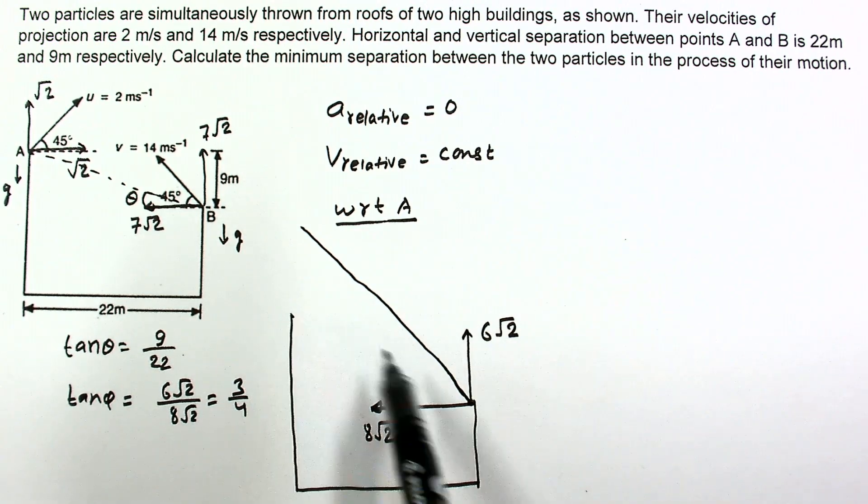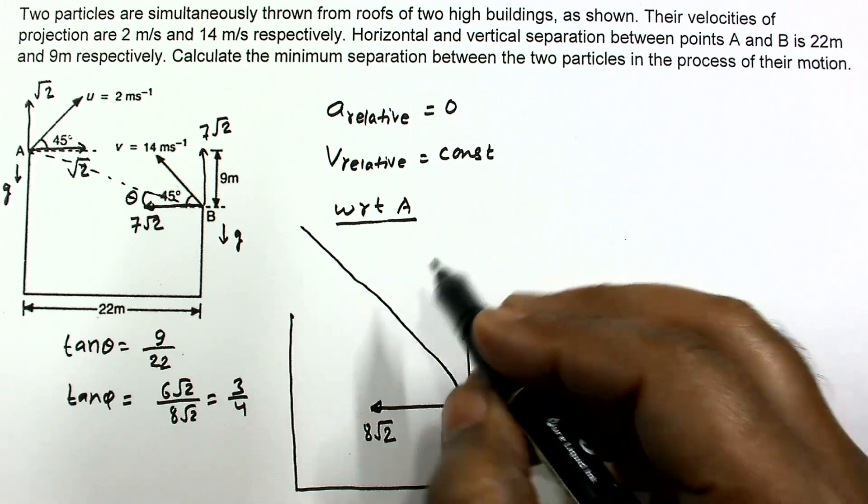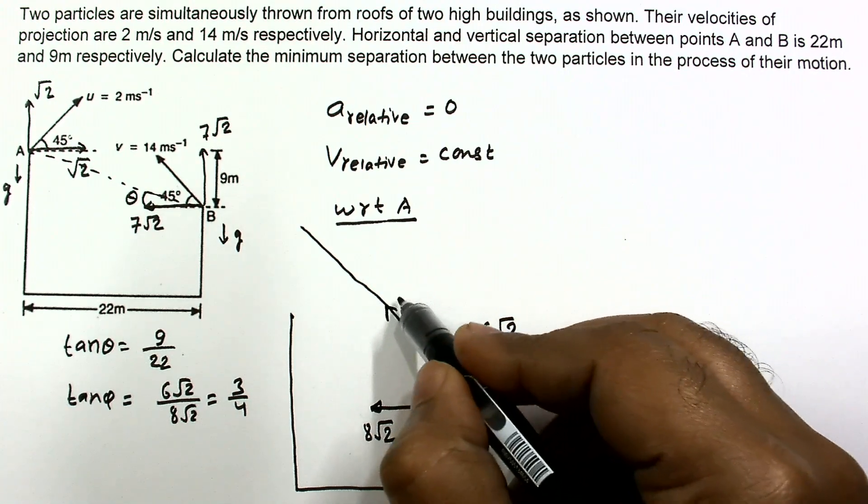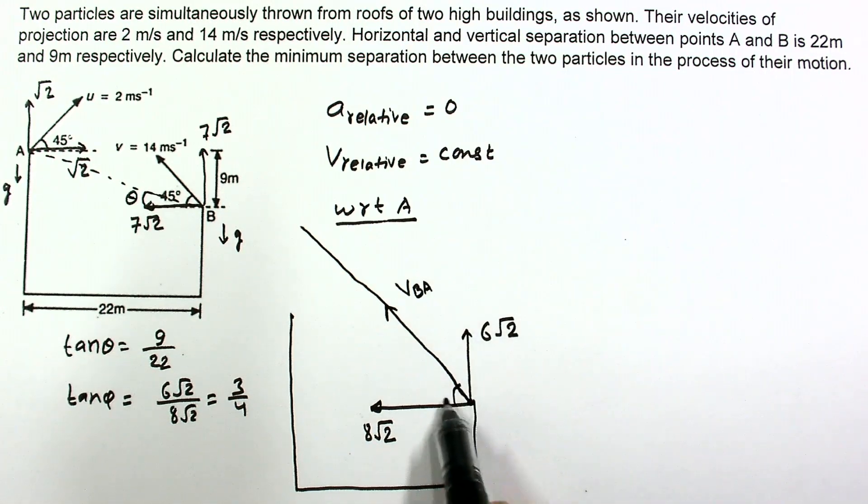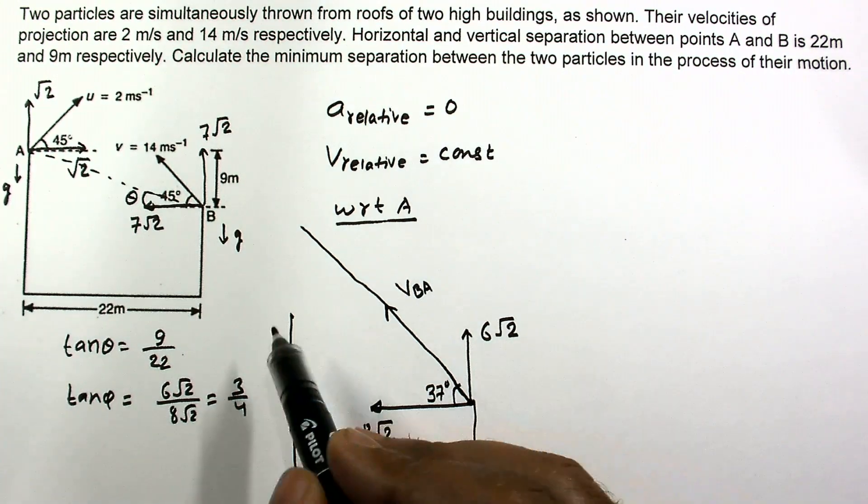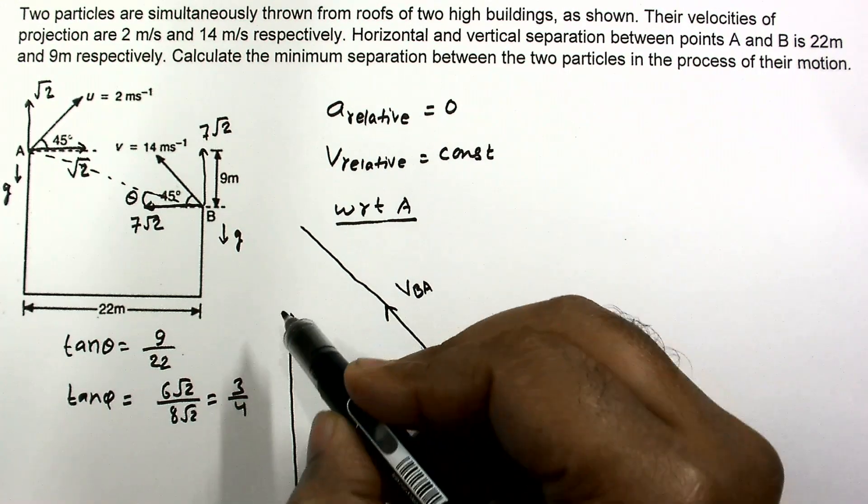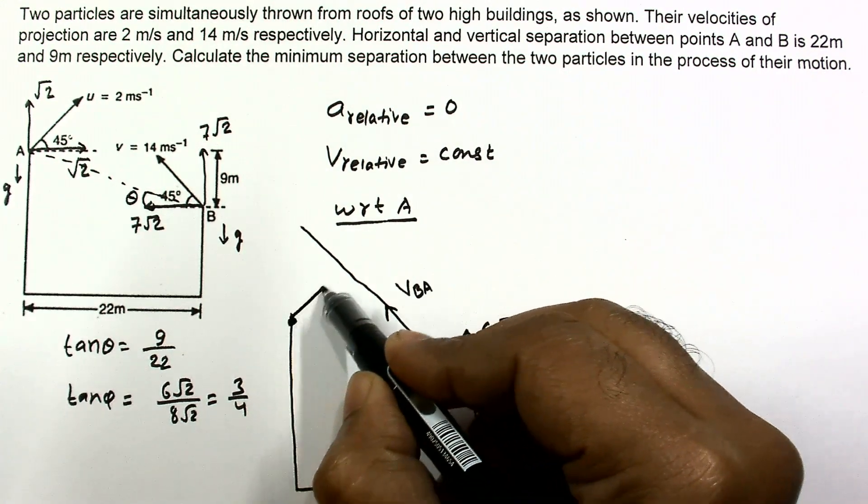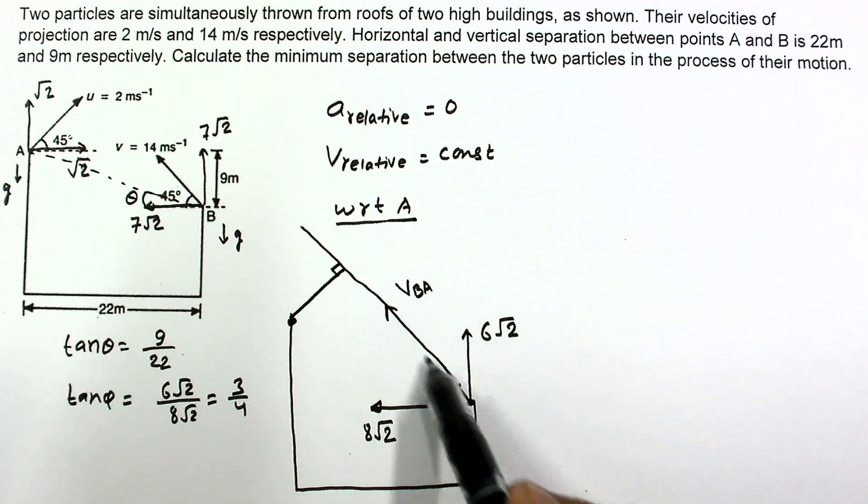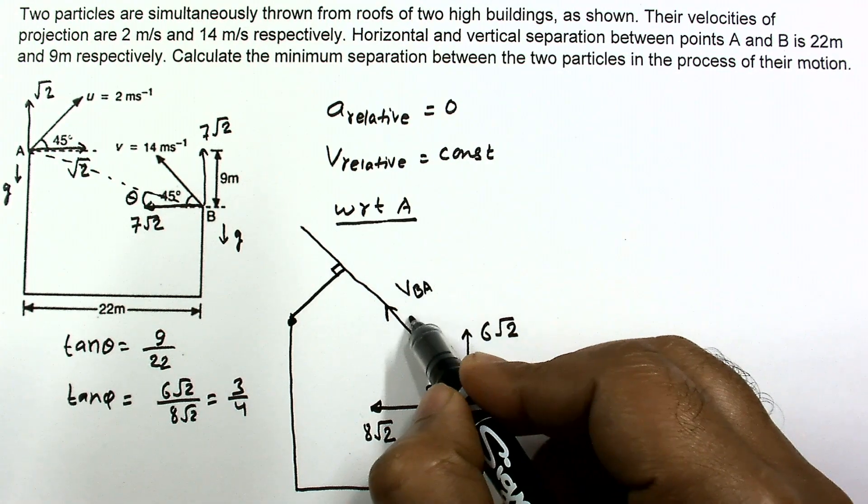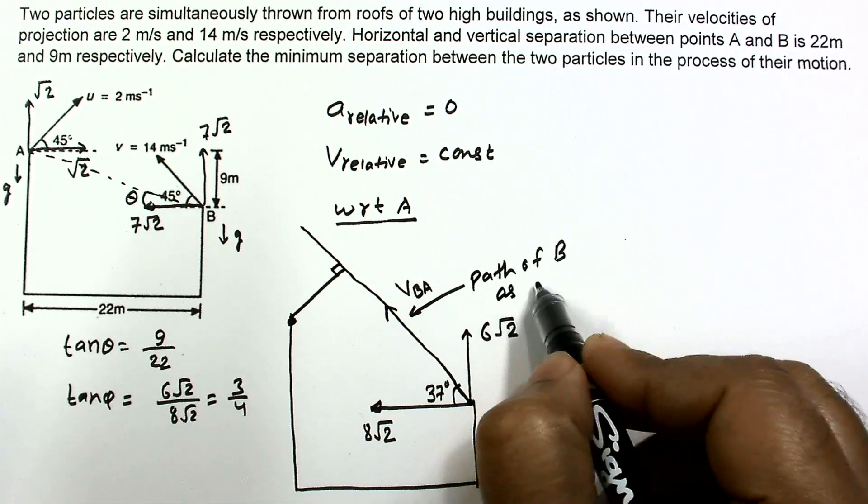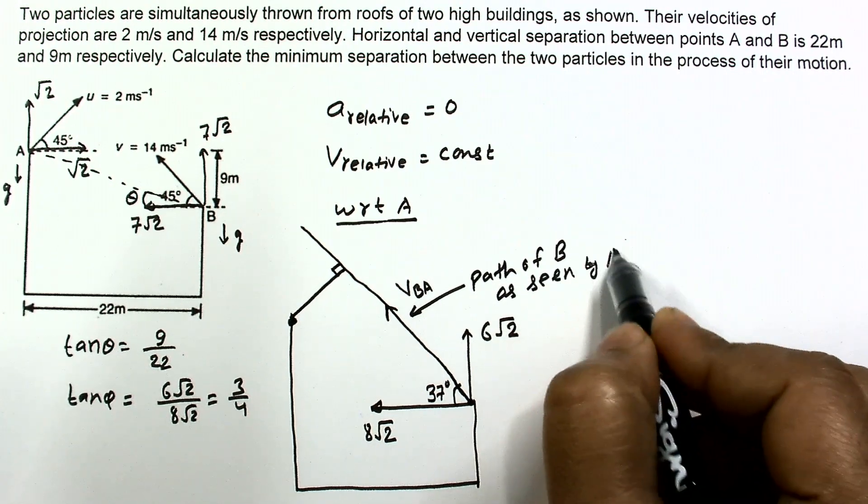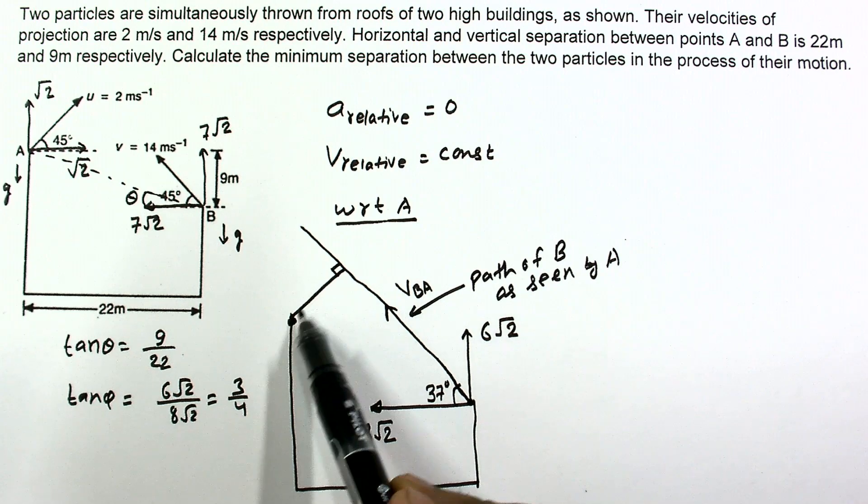The direction of motion of this particle will be something like this. When A is at rest, then for A, B is moving like this. This is the direction of velocity of B with respect to A at angle 37 degrees. Since this is at rest, minimum distance will be this perpendicular distance. This is the path of B as seen by A.